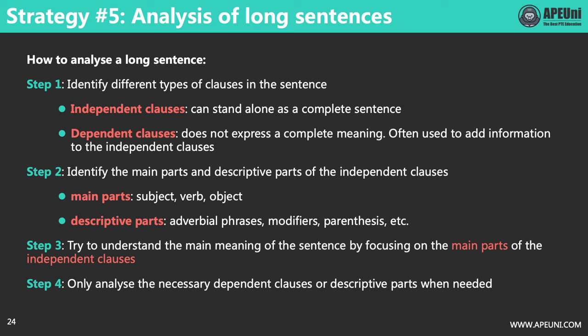The second step is to identify the main parts and the descriptive parts of the independent clauses. The main parts are subject, verb, and object. The descriptive parts are words or phrases like adverbial phrases, modifiers, parentheses, and so on — used to add information to the main parts. So we can ignore the descriptive parts at first.